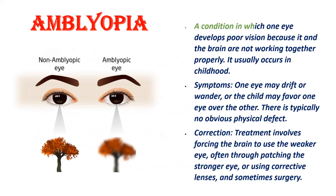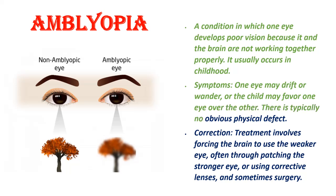Amblyopia (lazy eye): A condition in which one eye develops poor vision because it and the brain are not working together properly. It usually occurs in childhood. Symptoms include one eye drifting or wandering, or the child favoring one eye over the other, with typically no obvious physical defect. Treatment involves forcing the brain to use the weaker eye, often through patching the stronger eye, using corrective lenses, and sometimes surgery.